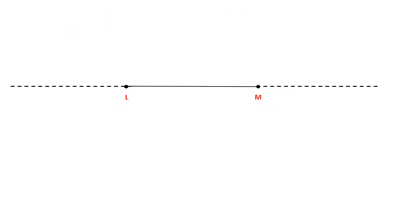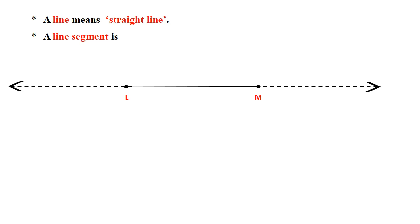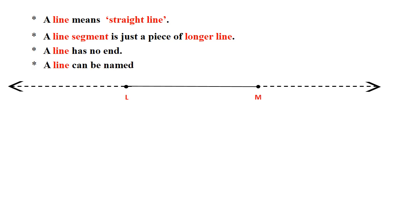Now, if we want to extend this line up to the end of the page, we use an arrow heading to show this extension. A line means a straight line in mathematics. A line segment is just a piece of a longer line. A line has no end points. A line can be named using small letters or by using any two points on that line.